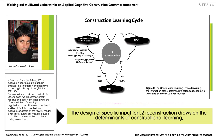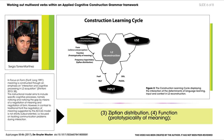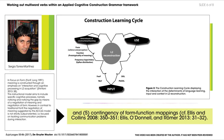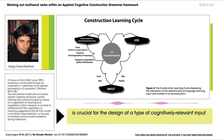The design of specific input for L2 reconstruction draws on the determinants of constructional learning, namely: statistical prediction of patterns, type and token frequency, Zipfian distribution, function, prototypicality of meaning, and contingency of form-function mappings. It is argued that the integration of these determinants is crucial for the design of the type of cognitively relevant input that takes into account form-meaning relations in L2 learning.